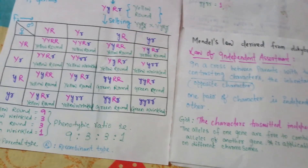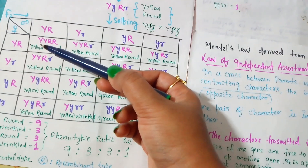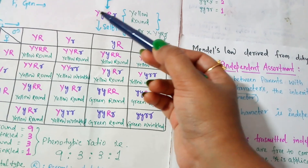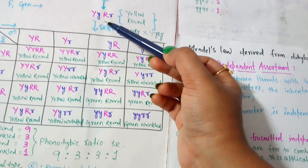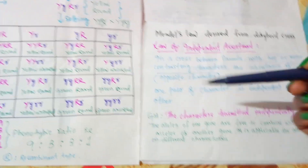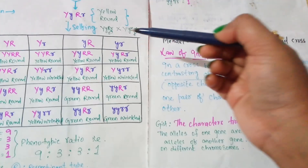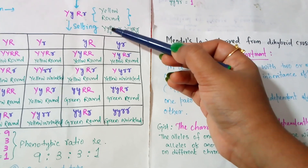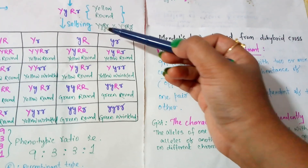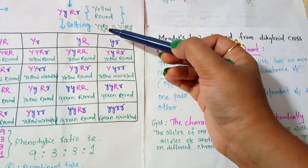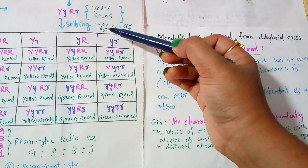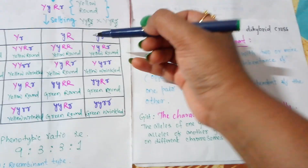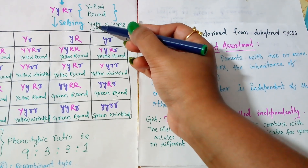To elaborate: the alleles of one gene — for example, for color, the alleles are capital Y and small y — are free to combine with the alleles of another gene — for shape, capital R and small r. So capital Y is free to combine with capital R, and capital Y is also free to combine with small r. Similarly, small y is free to combine with capital R and small r. This means the alleles of one gene are free to combine with the alleles of another gene, which is the essence of the law of independent assortment.